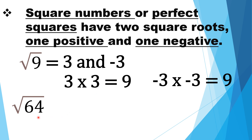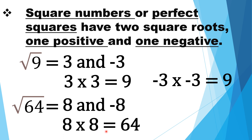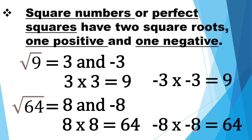What are the square roots of sixty-four? The square roots of sixty-four are positive eight and negative eight. Since negative eight times negative eight is equal to positive sixty-four. Thus, the square roots of sixty-four are positive eight and negative eight.